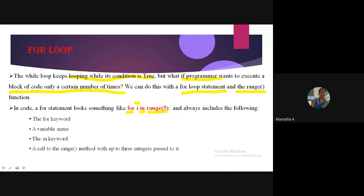Both 'for' and 'in' are keywords; 'i' is a variable, followed by the range function which takes integer arguments — up to three integers — followed by a colon. Then on the next line you write the indented block of code, which is your for clause.